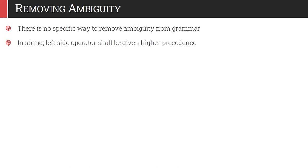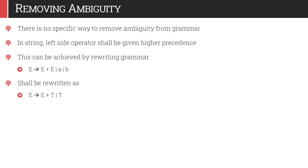How do we remove ambiguity? There is no specific way to remove ambiguity from a grammar, but the left-side operator should be given higher precedence so we always have a proper replacement of the variable. This can be achieved by rewriting the grammar. Assume our grammar is E gives E plus E, or a, or b. Having two E's creates ambiguity, so we rewrite it: the leftmost capital E is kept as-is, and the rightmost E is replaced by variable capital T.